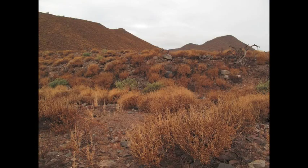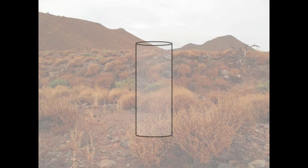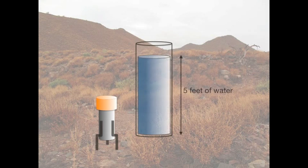Imagine an experiment. Put a 6-foot-tall glass cylinder that's open at the top out in the preserve, away from trees and buildings. Put an automatic rain gauge on the ground nearby. At the very beginning of the year, fill the glass cylinder with 5 feet of water.